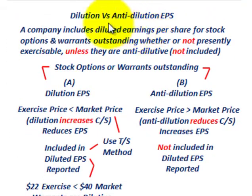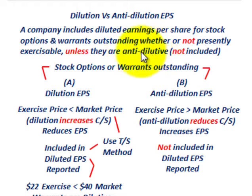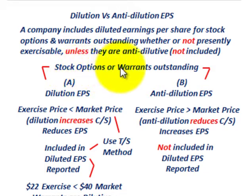Next, we have to look at whether or not these warrants are dilutive or would dilute our earnings per share. This is where we look at dilution versus anti-dilution for earnings per share. A company includes diluted earnings per share for stock options and warrants outstanding, whether or not they're presently exercisable, unless they are anti-dilutive. If they are anti-dilutive, they would not be included in the diluted earnings per share. We're concentrating on warrants in this example, but it would be the same for stock options.